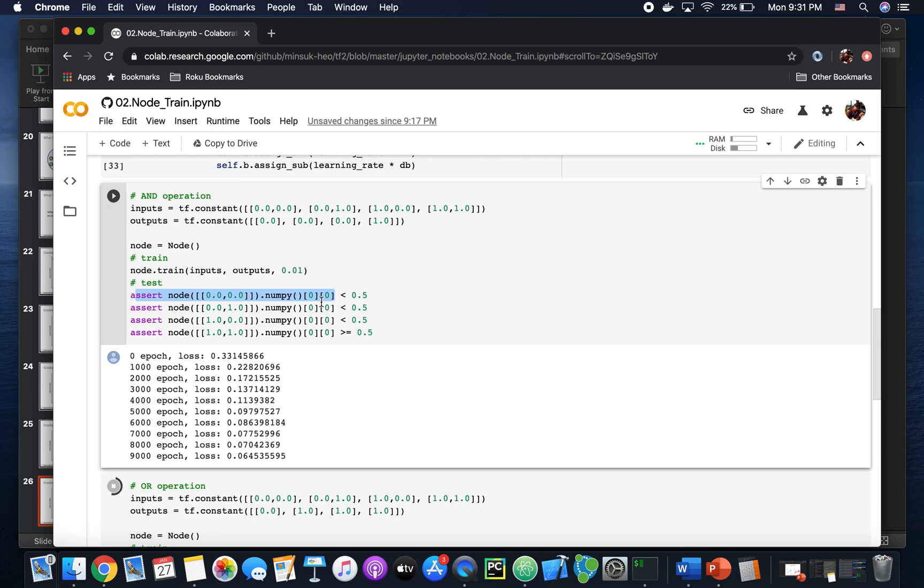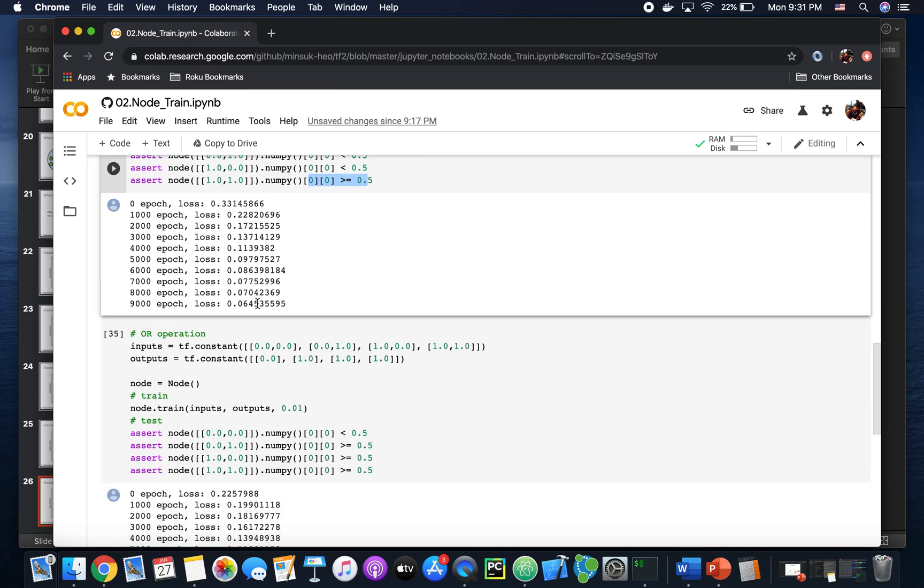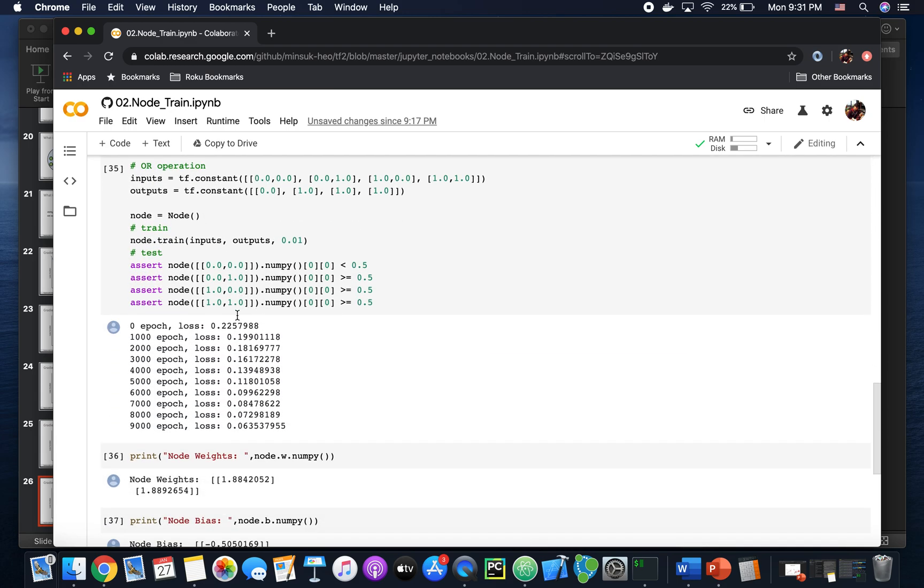0, 0 is less than 0.5 here. But the 1, 1 is greater than 0.5. And here's the OR operation. Same thing. You can see the loss is going down. And every test result is successful in here.